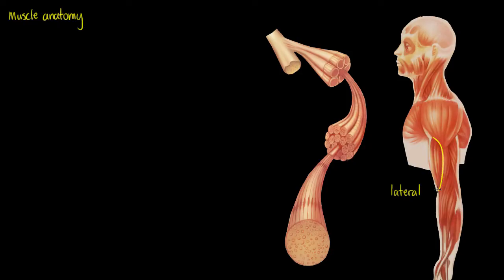The first thing you'll see up on the screen here is a lateral view of a person with their muscles, and this zoomed-in, strange-looking structure here. This strange-looking thing that I have drawn — for the sake of this video we're going to say that it's our biceps brachii, so it's part of our biceps brachii muscle.